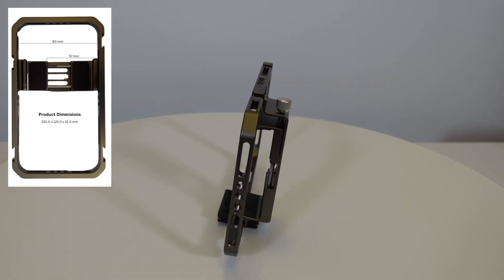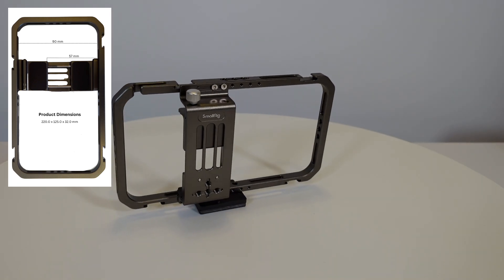With this particular SmallRig the outer frame is a solid piece of aluminum and this is really nice because this frame is rock solid.